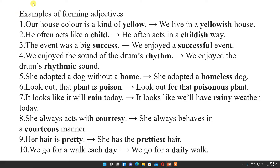Examples of forming adjectives: our house color is a kind of yellow — we live in a yellowish house, so yellowish is the adjective made. You often act as a child — you often act in a childish way. Like that: success becomes successful, rhythm becomes rhythmic, home becomes homeless, poison becomes poisonous, rain becomes rainy, courtesy becomes courteous, pretty becomes prettiest, day becomes daily. We use different forms of adjectives in our sentences according to need.